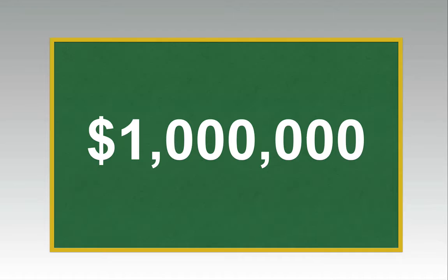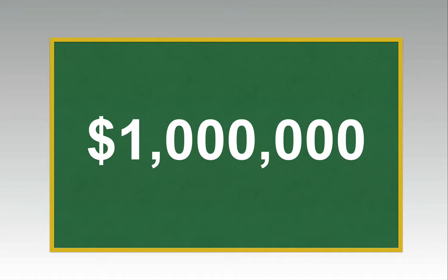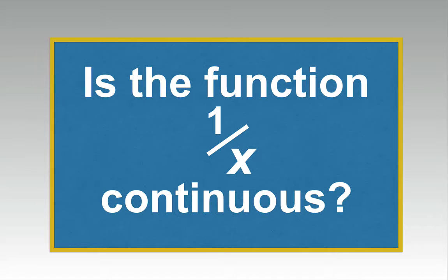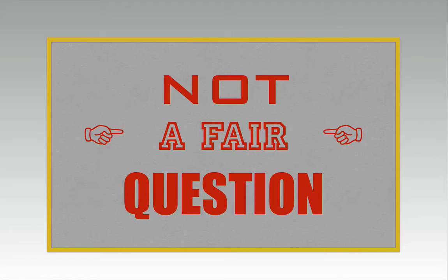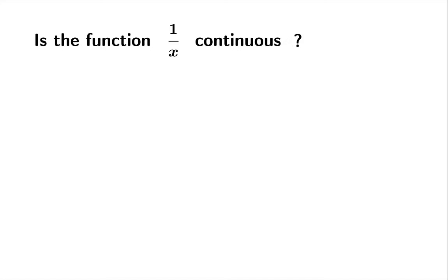Here's a million dollar question. Is the function 1 over x continuous? What's your answer? I would claim that this is not a fair question. When you ask the question, is the function 1 over x continuous, you're really missing some information. You've got to know where you're claiming the function is continuous.